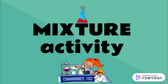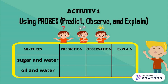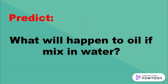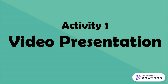Let's have a short activity about mixture. In activity 1, we are going to use PROVEX — Predict, Observe, and Explain. Here are the different materials: mixtures of sugar in water and oil in water. What will happen to sugar if we mix it in the water? What will happen to oil if we mix it in water? Let us find out by watching the video.